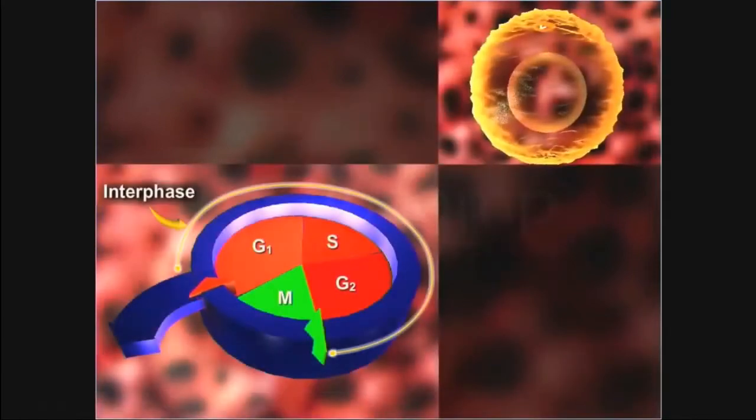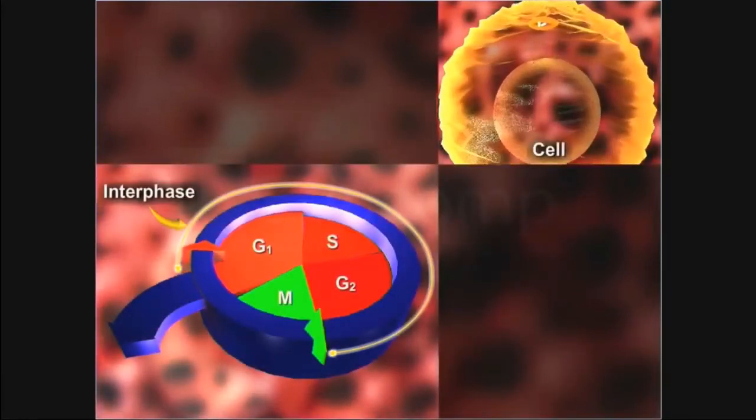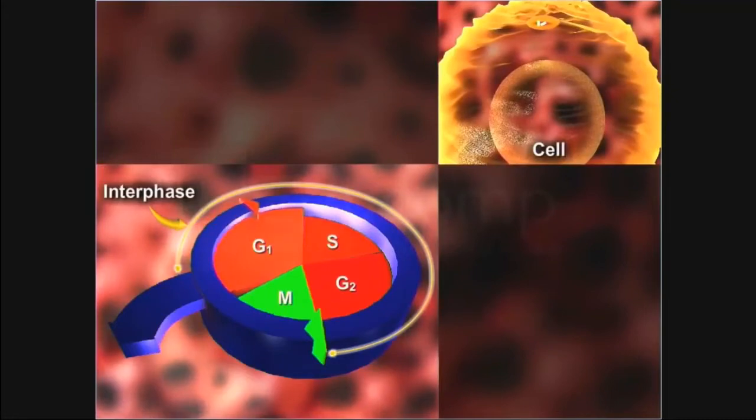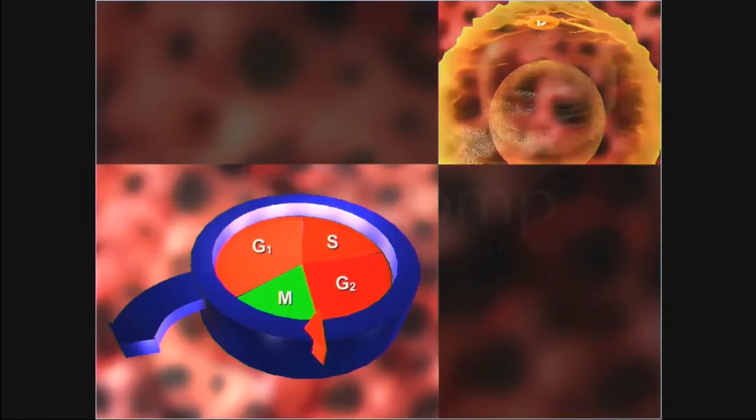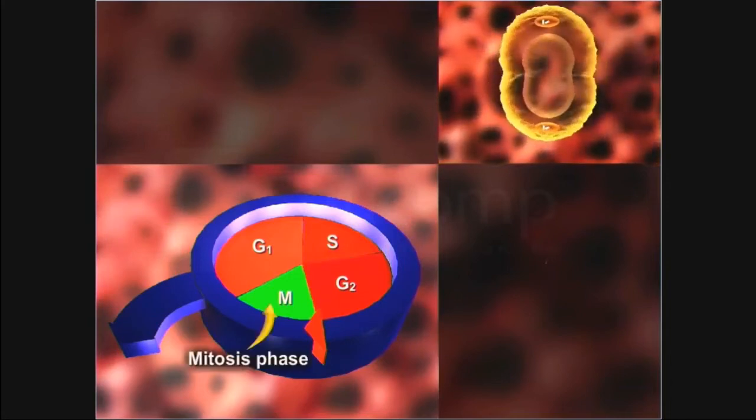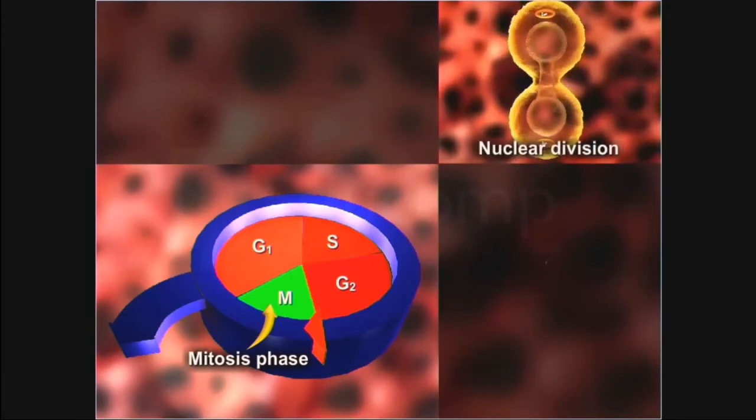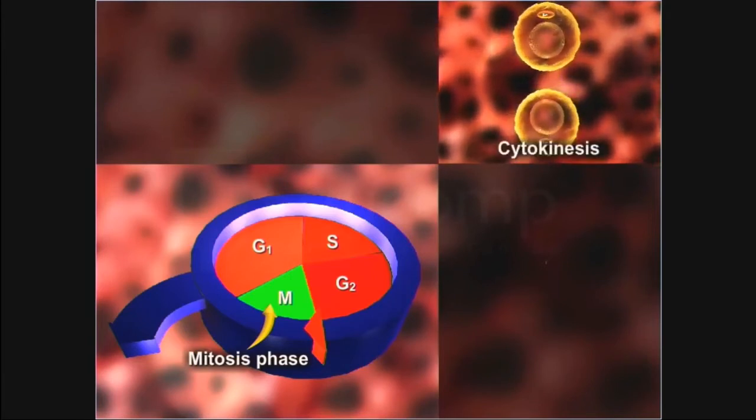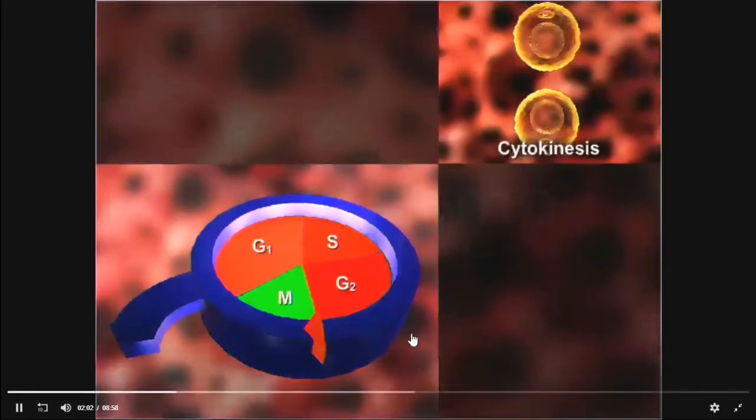The interphase is the period during which a cell appears to be resting but in reality, it undergoes a period of rigorous activity. During this phase, the cell not only grows but also prepares for DNA synthesis and cell division. During the mitosis phase, the cell undergoes nuclear division followed by cytokinesis. During each cell cycle, a cell duplicates not only its genome but also all the other cell organelles and macromolecules.